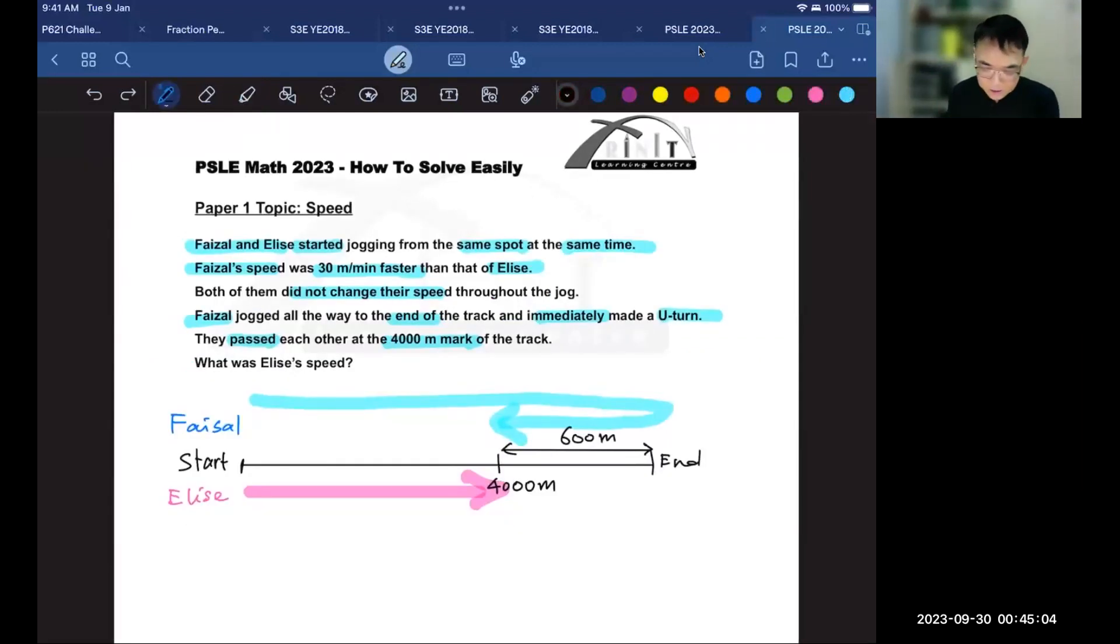What Faisal did was that he went and did this extra distance to reach the end, and then this extra distance to come back to meet Elise at the 4,000 meter mark. In other words, the two black arrows that I've just drawn here is the difference in the distance or the extra distance that Faisal covered. But the question is, how was Faisal able to travel an extra distance?